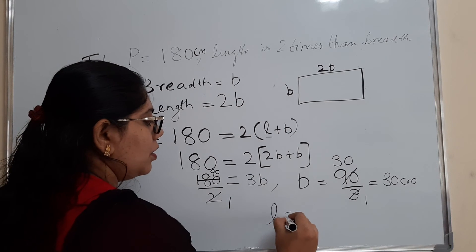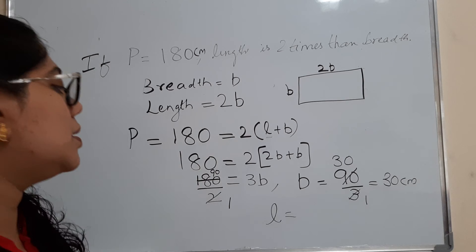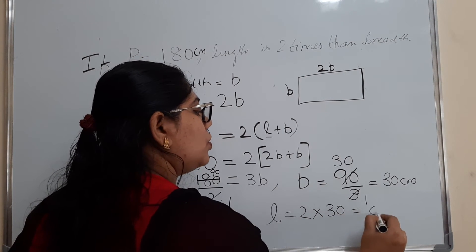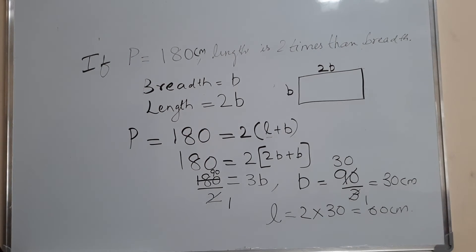So what will be the length now? We have found the breadth. Length is 2 times the breadth. So 2 into 30, that is equal to 60 centimeters. I hope you understand.